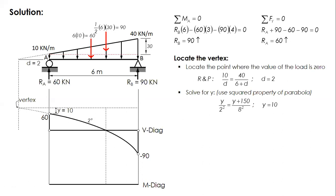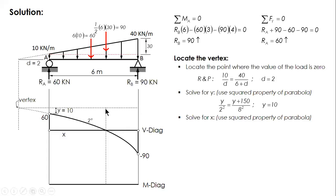Now we can solve for x using the squared property. We have two usable reference points. Using the values 70 (which is 60 plus 10) over (x plus 2) squared equals 160 (which is 90 plus 70) over 8 squared, solving gives x equal to 3.2915.